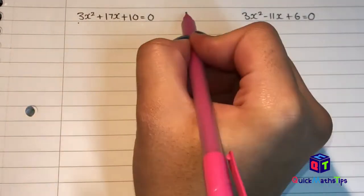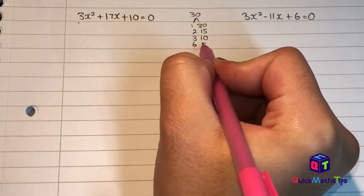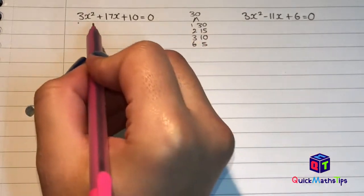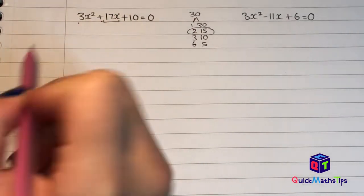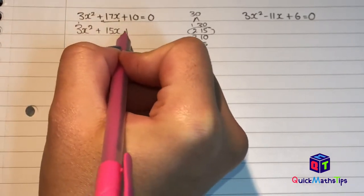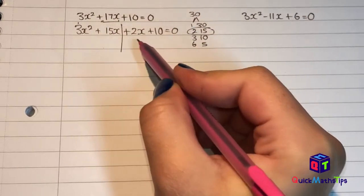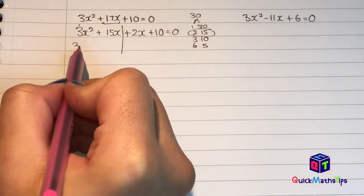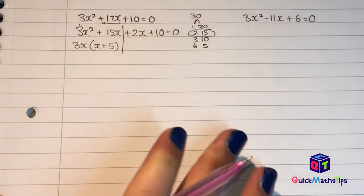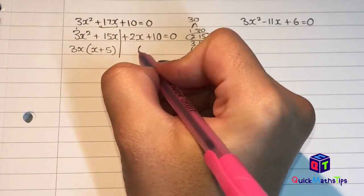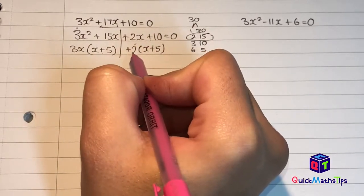I multiply my a and my c values: 3 × 10 = 30. My factors of 30 are 1 and 30, 2 and 15, 3 and 10, 6 and 5. Two numbers that add to give me 17 are positive 2 and positive 15. So I split 17x into 2x and 15x, giving 3x² + 15x + 2x + 10 = 0. I split this down the middle and factorise both sides individually. On the left I pull out 3x: 3x² ÷ 3x = x and 15x ÷ 3x = 5, so I have x + 5 inside my brackets. Because I have x + 5 here, I need x + 5 on the other side. 2x ÷ x = 2 and 10 ÷ 5 = 2, so I have plus 2 on the outside.